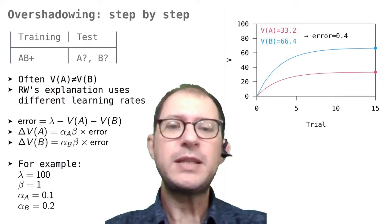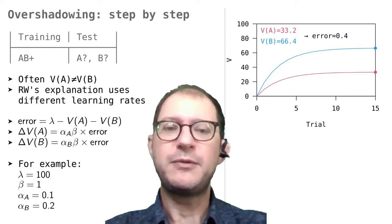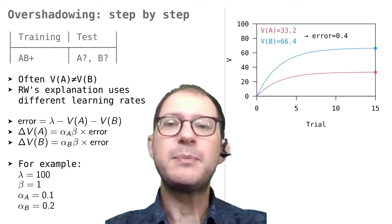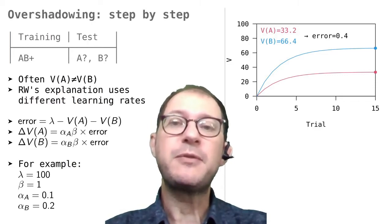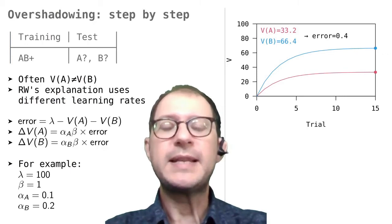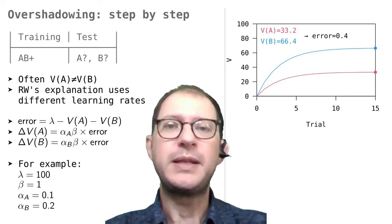What I want to point out at this point is that when learning stops, because the error is 0 or almost 0, the associative strength of B will be twice that of A. You don't see this right away as you do the experiment, because A and B are always presented together, but in the model we can see that B acquires associative strength faster than A. In an experiment, to see this you would test A and B separately after learning is completed.